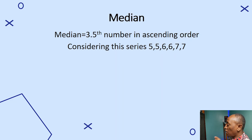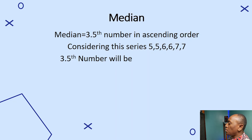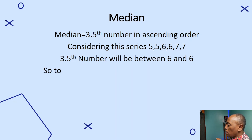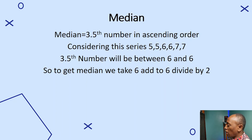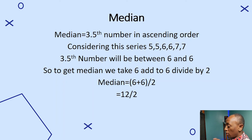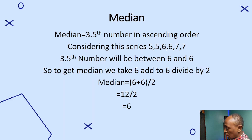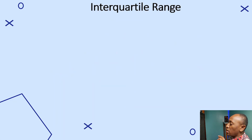Considering the series 5, 5, 6, 6, 7, 7, the 3.5th number is between 6 and 6. To get the median, we add 6 to 6 and divide by 2: (6 + 6) / 2 = 12 / 2 = 6. So the median is 6.